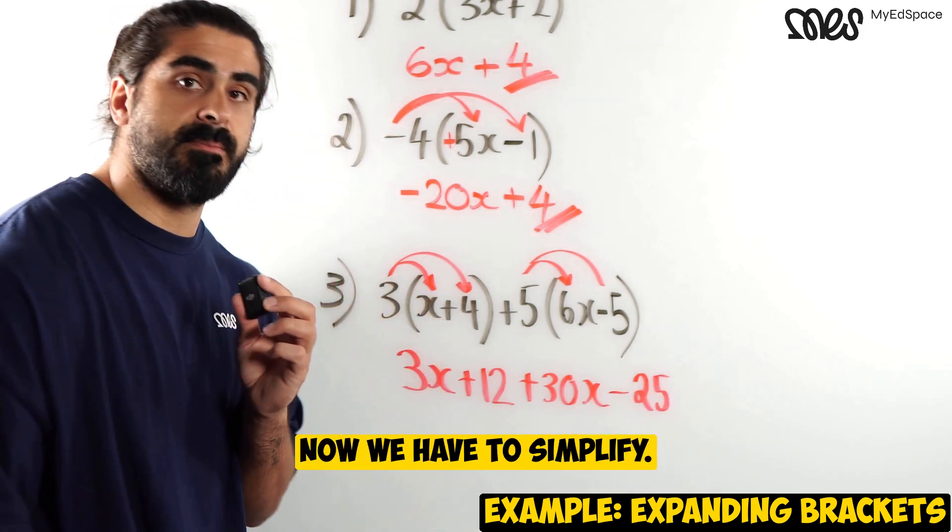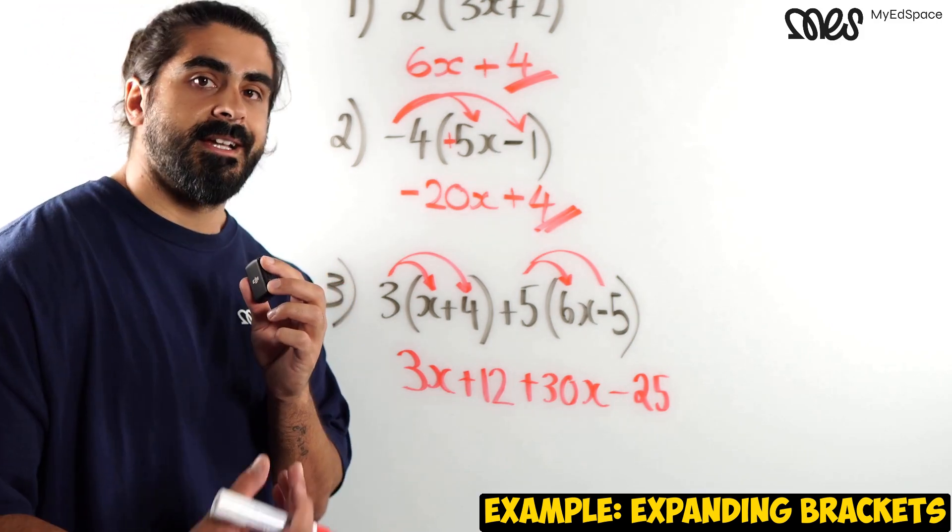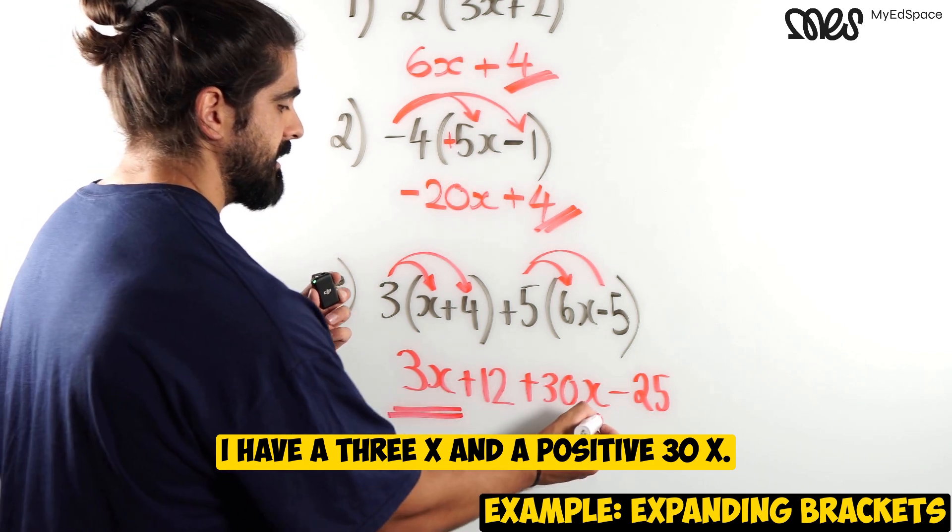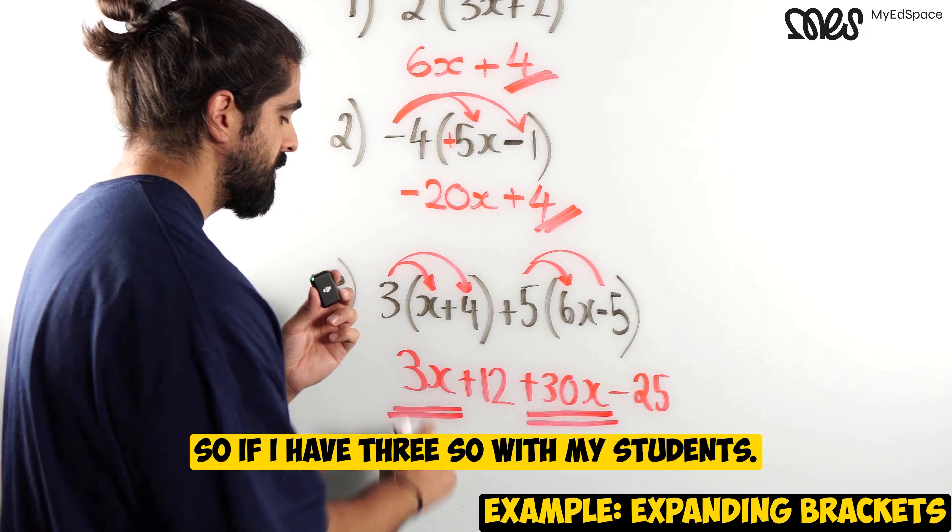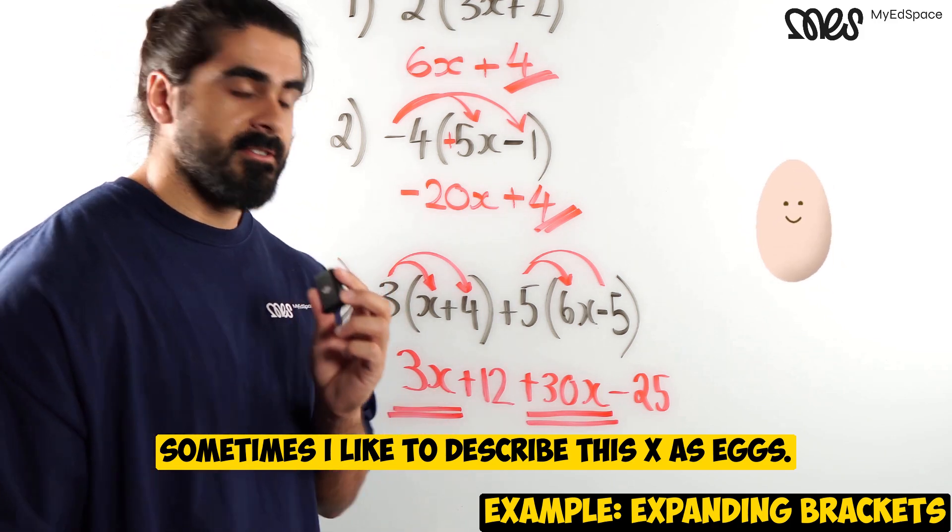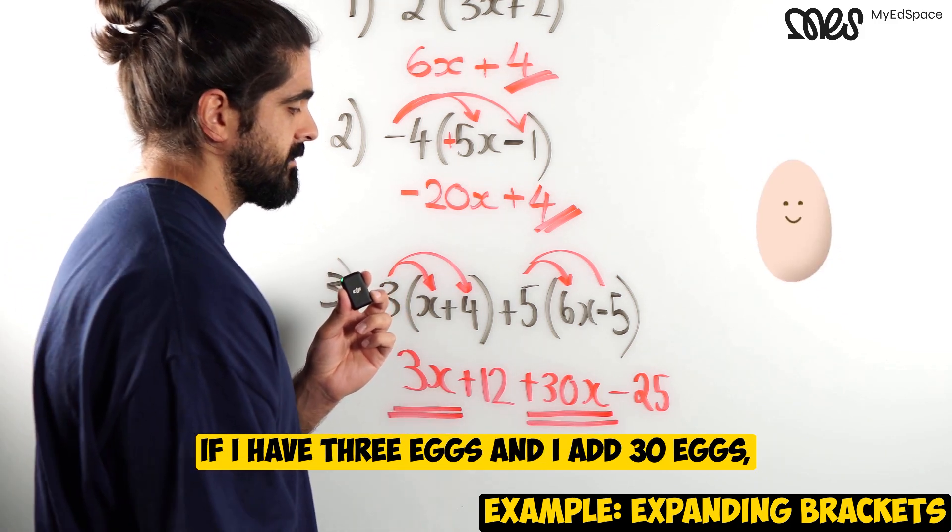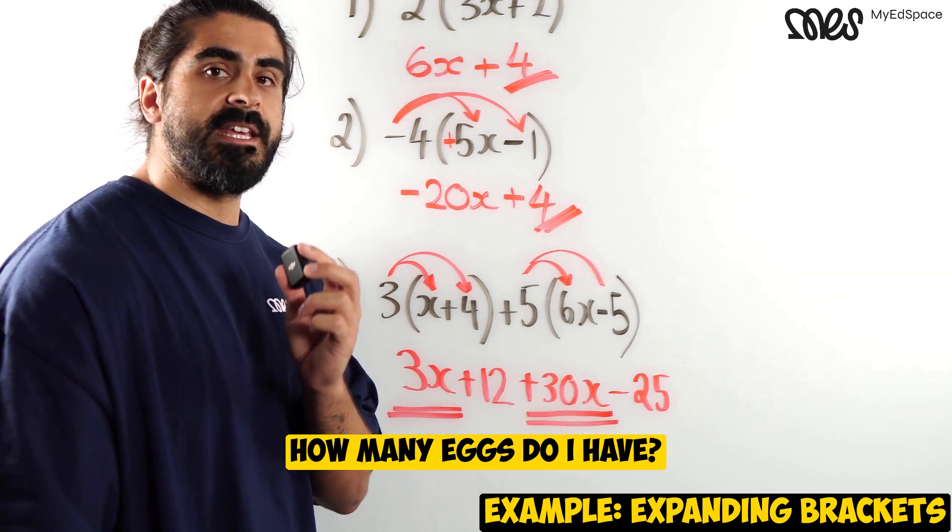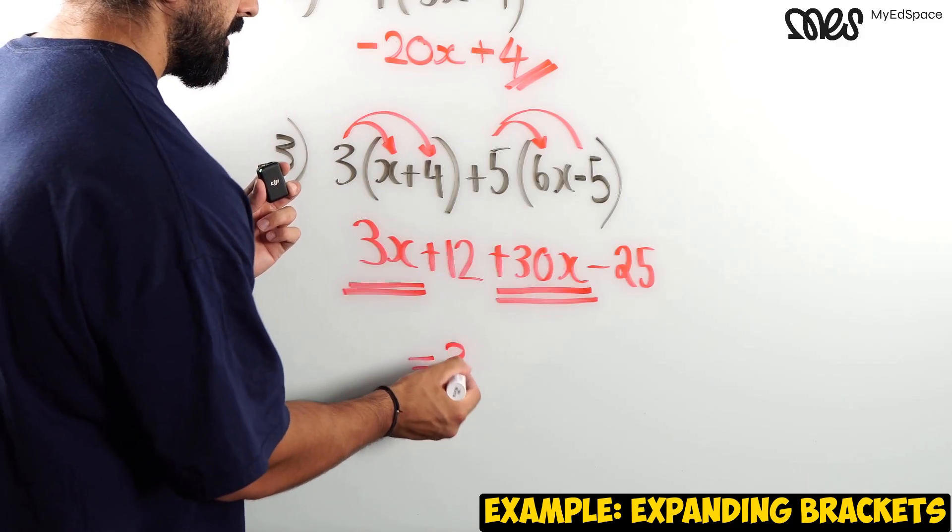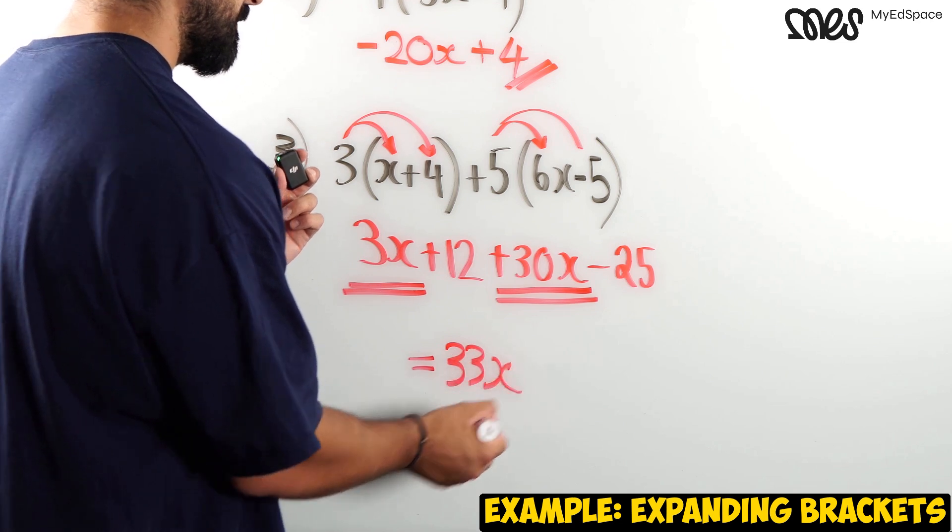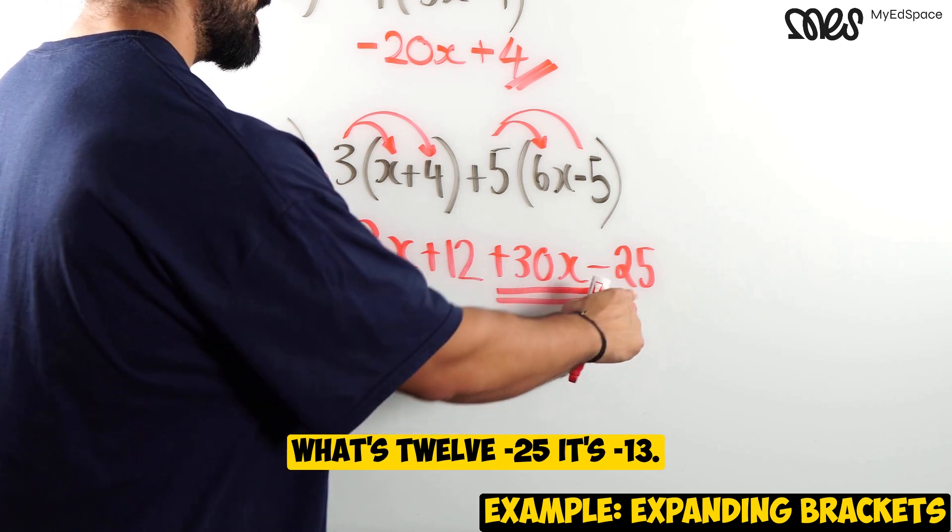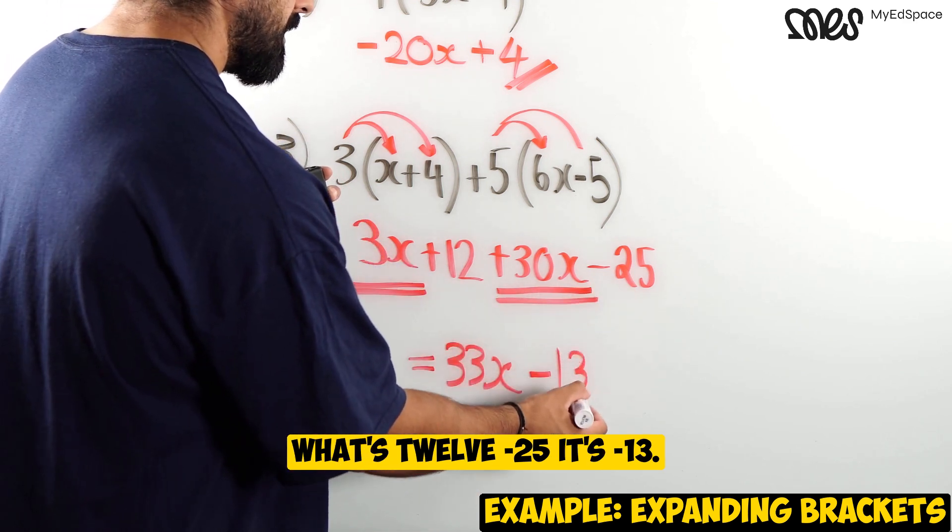Now we have to simplify. So we do something known as collecting the like terms. I have a 3x and a positive 30x. So if I have 3 - with my students, sometimes I like to describe this x as eggs. If I have 3 eggs and I add 30 eggs, how many eggs do I have? We have 33. 3 plus 30 is 33 eggs, and then here we have 12 minus 25. What's 12 minus 25? It's minus 13.